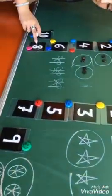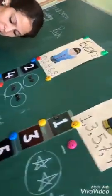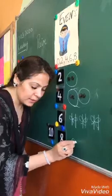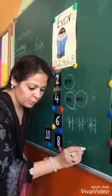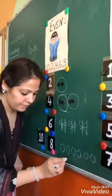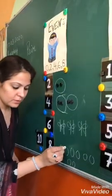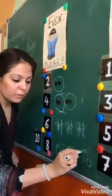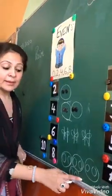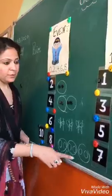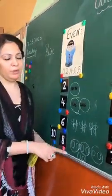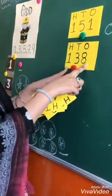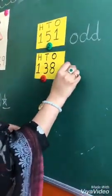Is 138 an even or an odd number? It is an even number, because it has 8 at its one's position. Eight is an even number that works in pairs. I will make 8 balls — one pair, two pair, three pair, four pair — and nothing is left alone. So 138 is an even number.